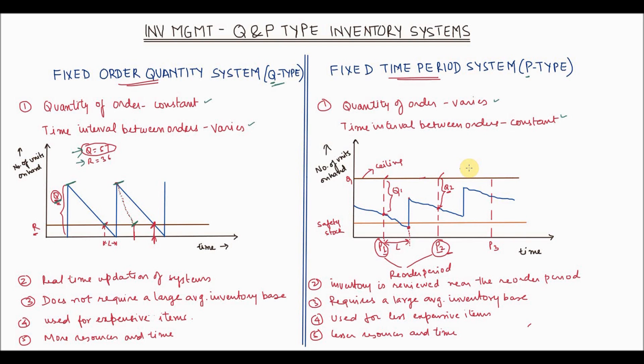Now similarly, let's understand the P type system. As you can see on the X axis we have time and on the Y axis we have number of units on hand. The inventory is counted at fixed intervals in the P type system. So let's say P1 can be Monday of a week. P2 can be the Monday of next week and so on.